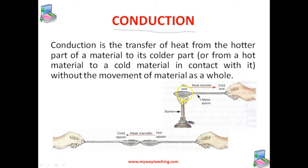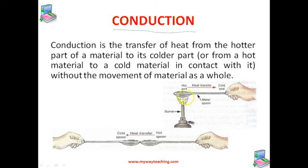Here, only heat is getting transferred from the hot end to the cold end, but there is no movement of the material. Such a transfer of heat from the hot part of the material to its cold part, without the actual movement of the material, we call it conduction. The hot end of the spoon is not moving — it is just the heat that is getting transferred from one end to the other.